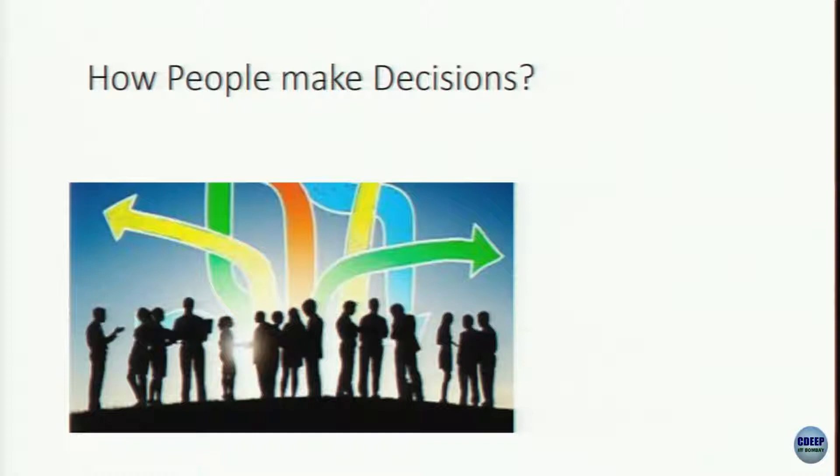We all take many decisions in everyday life: which course to take as a student, which branch of engineering to pursue, should I work or continue my studies, which movie to watch, which brand of phone — Android versus iPhone. These are decisions you make in everyday life, and there are certain binding rules behind them.